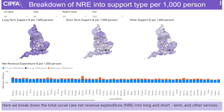The three maps at the top of the page show support types: long term, short term, and other. At the bottom you will see a chart of these exact values.